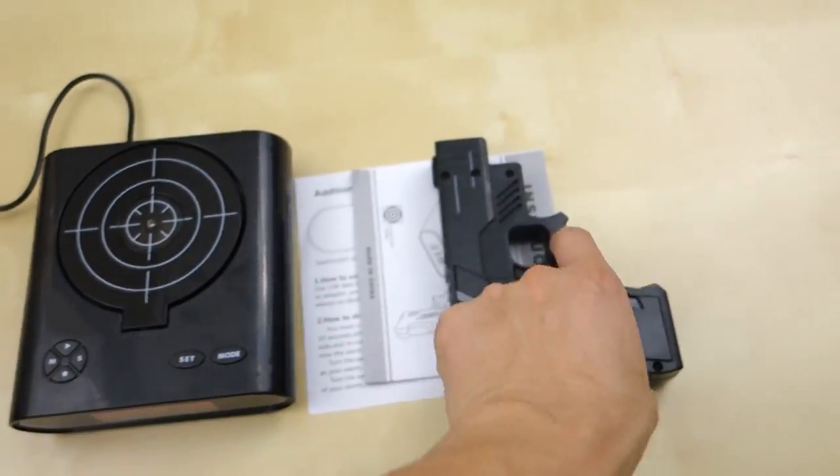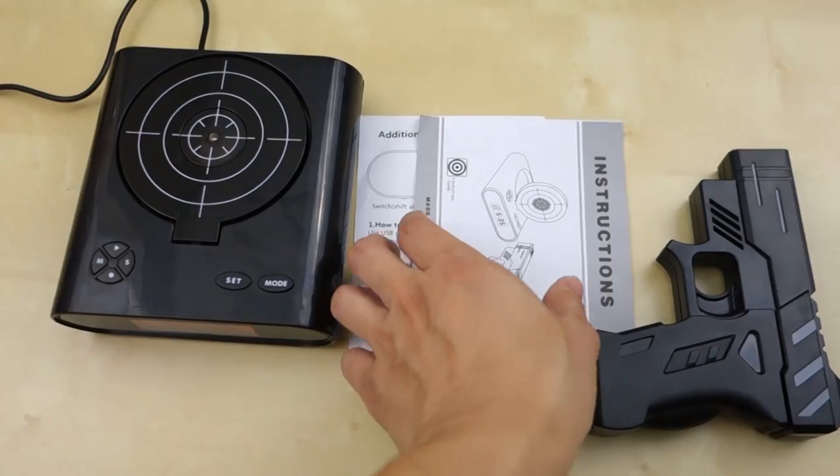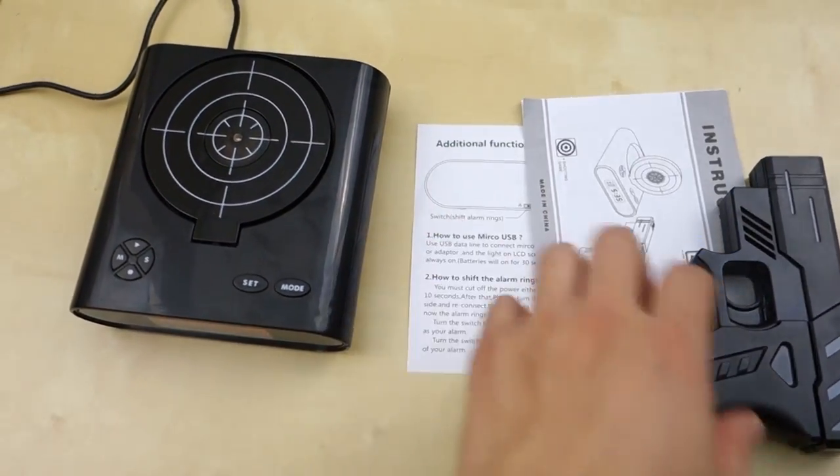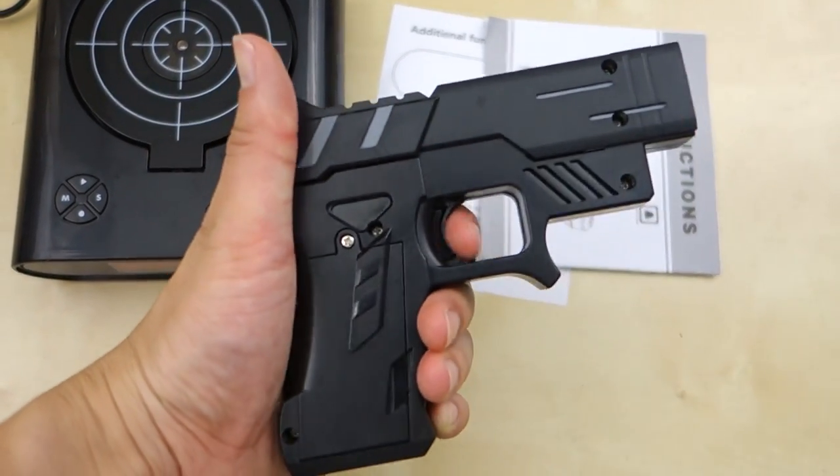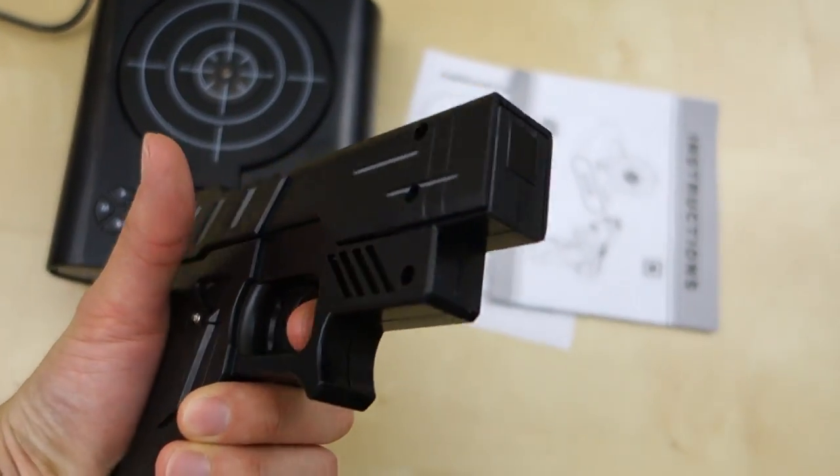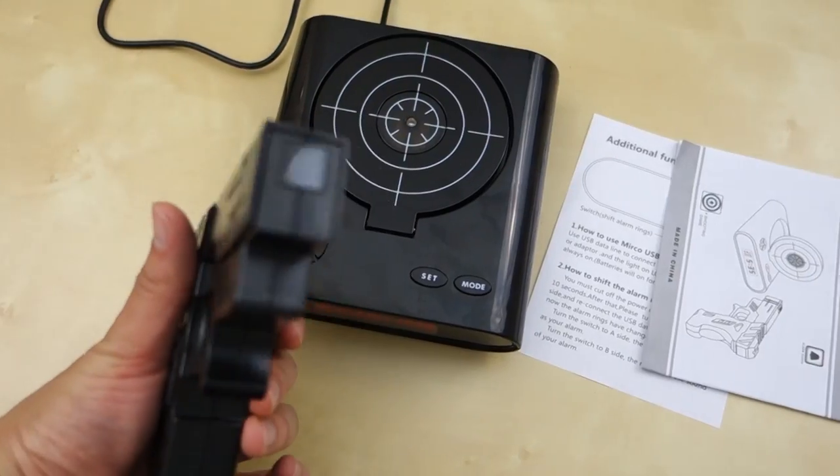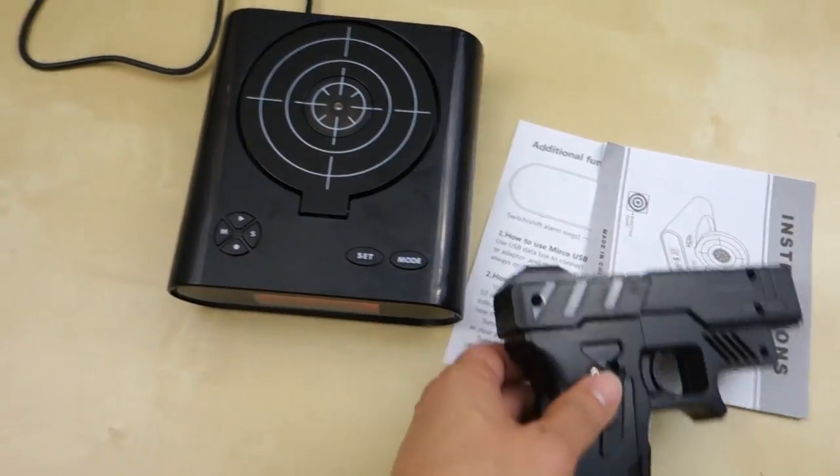Besides the unit you get the gun. It's pretty cool. And then you have a user manual and a little additional piece of information. So the gun takes two AA batteries and you can see right here. It has a little cocking action. It will release an infrared light which the unit picks up.